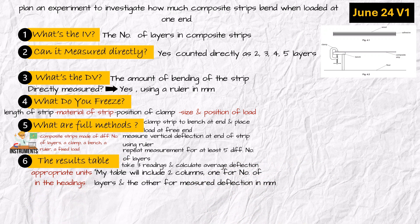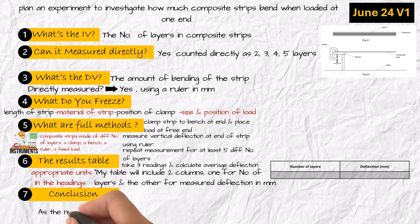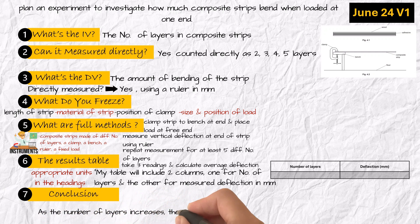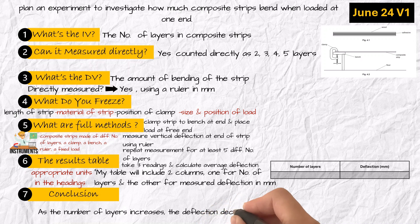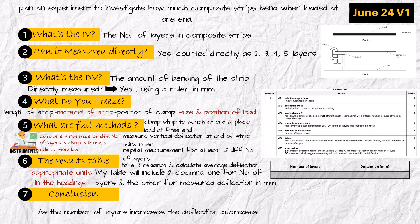Number six: the results table. My table will include two columns — one for the number of layers and the other for the measured deflection in millimeters — with appropriate units in the headings. Your final table layout should follow this format. Number seven: conclusion — as the number of layers increases, the deflection decreases. Put it all in one strong paragraph, hit pause, and check the mark scheme. That's how you score every point.